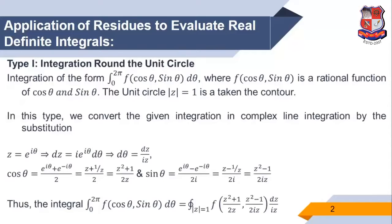In this type, we convert the given integration into a complex line integration by the substitution z = e^(iθ). This implies dθ = dz/(iz). We know that cosθ = (e^(iθ) + e^(-iθ))/2, so replacing e^(iθ) with z gives cosθ = (z + 1/z)/2 = (z² + 1)/(2z). And sinθ = (e^(iθ) - e^(-iθ))/(2i), giving sinθ = (z - 1/z)/(2i) = (z² - 1)/(2iz).